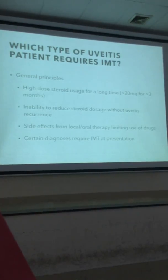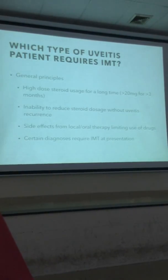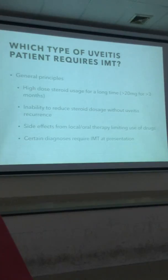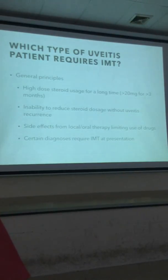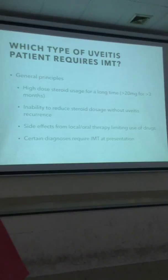Which types of uveitis patients require immunomodulatory therapy? General principles are if patients are on high-dose steroids for a long time — the number we typically talk about is more than 20mg of prednisone for more than 3 months. Also, if there's an inability to reduce the steroid dosage without uveitis recurrence — for example, that 9-year-old we talked about previously, you couldn't get him below 35mg without uveitis coming back.